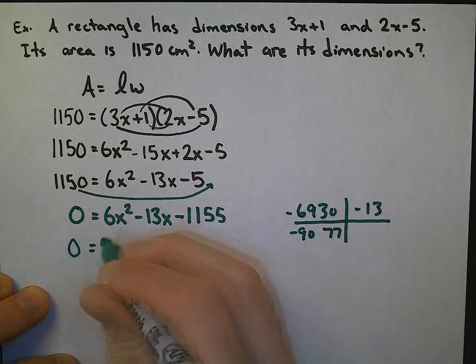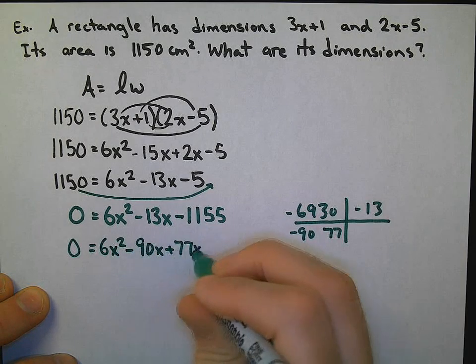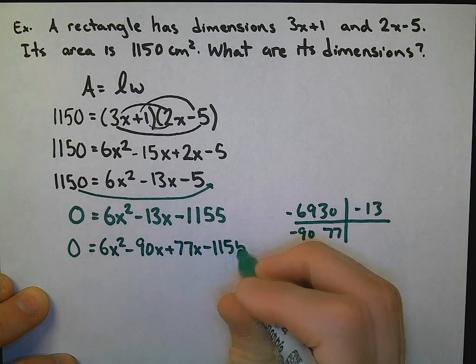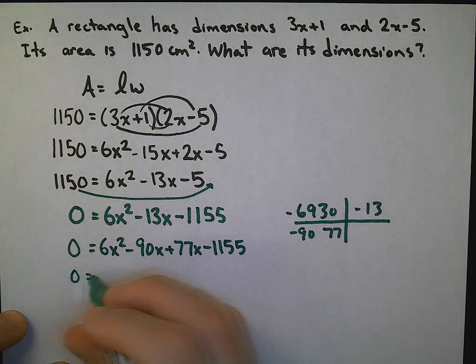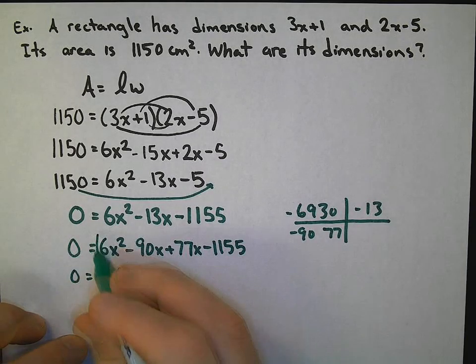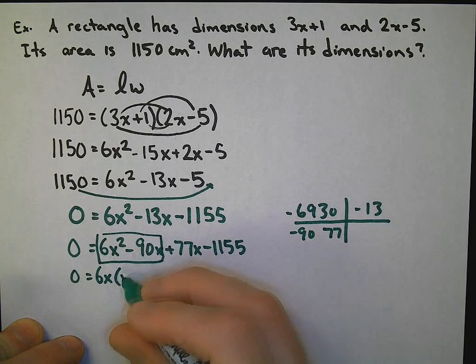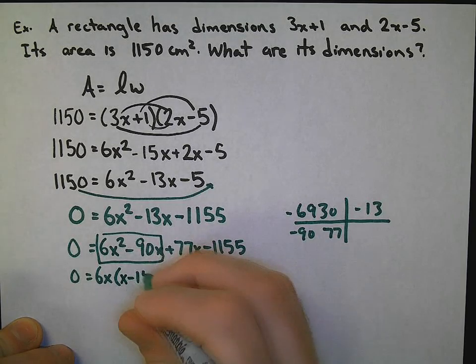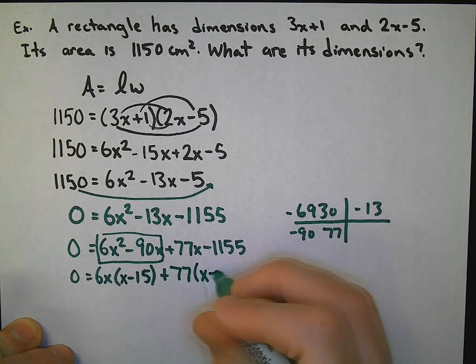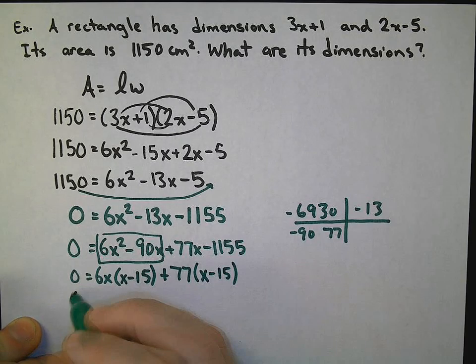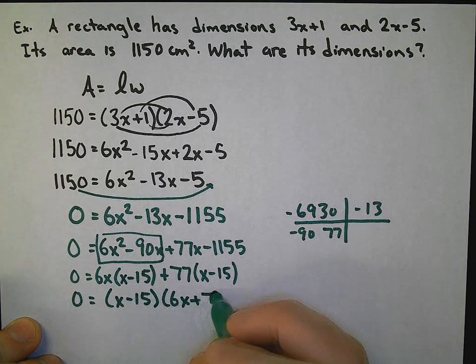Let's factor this. That gives us 0 = 6x² - 90x + 77x - 1,155. We see a greatest common factor here. We are going to factor by grouping: 6x(x - 15) + 77(x - 15). So what are your two factors? One is (x - 15), the other is (6x + 77).